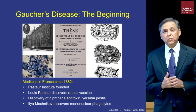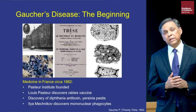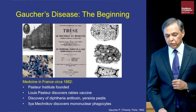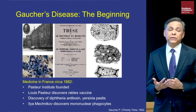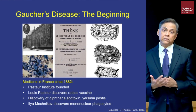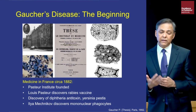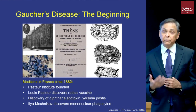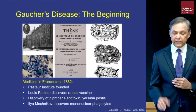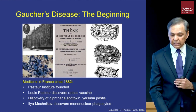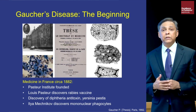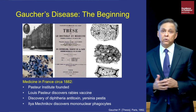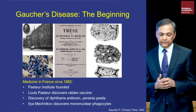He saw very abnormal histiocytes, now called Gaucher cells. When he saw these abnormal cells, Dr. Gaucher felt he had discovered a new kind of neoplasm of the spleen, and therefore the first title page of his MD thesis claims he discovered a primitive epithelioma of the spleen.